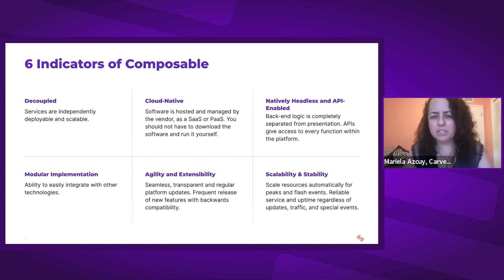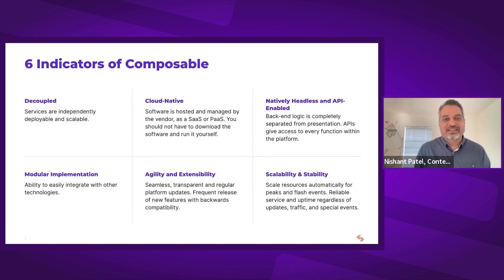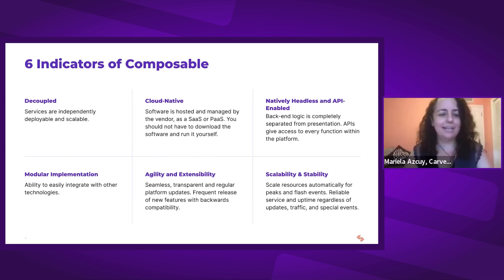This checklist checks off 80–90% of your needs. It protects you from purchasing legacy technology that won't work well with other systems. Regardless of whether you're going full composable architecture or not, you should buy software based on these indicators.